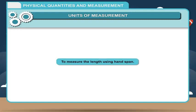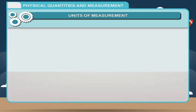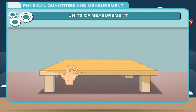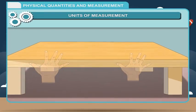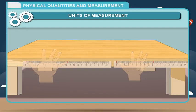Activity — To measure the length using hand span: Use your hand span to measure the length of a table, then ask your friend to use his hand span to measure the same length. You will notice that there is a difference between the two measurements. Therefore, for reliable and accurate measurement, we need standard units of measurement.